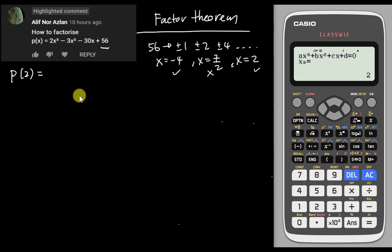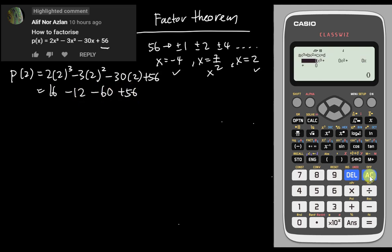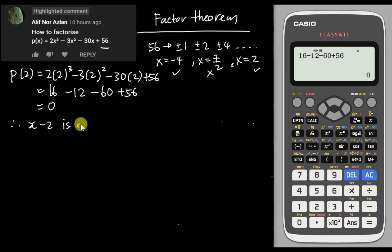We will try p(2). To confirm that 2 is a factor, after you insert the value, if you get 0 that means it is the factor. So: 2³ minus 3(2²) minus 32 plus 56, which is 8 minus 12 minus 60 plus 56. You should get 0. Since it equals 0, therefore x minus 2 is a factor of p(x).